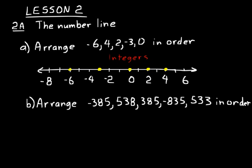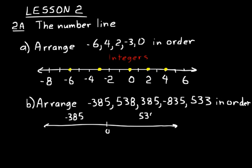Let's try another problem — this one has a little bit larger values of integers. Arrange those numbers in order. What we can do is think of a number line. We don't have to put a bunch of tick marks on it — just put zero on it. We remember that all numbers to the left are negative, all numbers to the right are positive. Let's start putting numbers in place, writing them right above the number line. Negative 385 would be pretty far to the left. Numbers that are less than another number are always to the left on a number line.